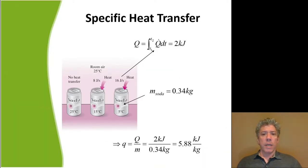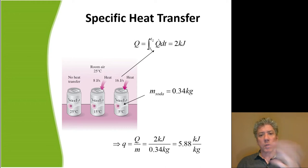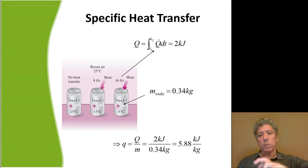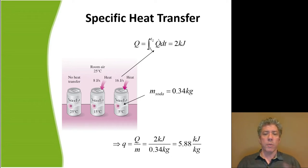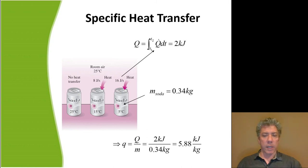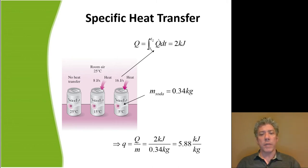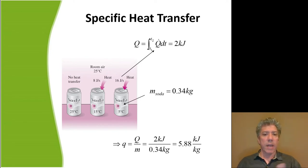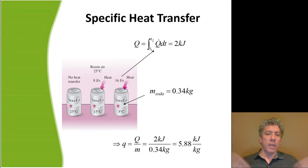A lot of times it's convenient to talk about heat transfer on a per-unit mass basis. Say we have a can of cold soda at five degrees left out on the countertop. If we leave it long enough, it'll come to room temperature of about 25 degrees Celsius. When the can is really cold, the rate of heat transfer in is much higher — say 16 joules per second at five degrees. When the can reaches 15 degrees, the rate cuts about in half to eight joules per second, and when it reaches 25 degrees the heat transfer rate goes to zero.